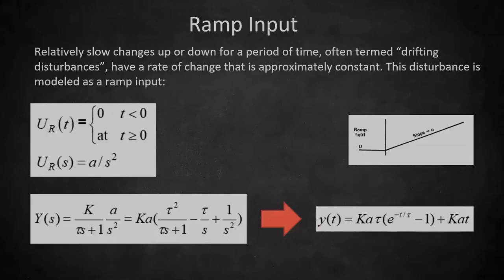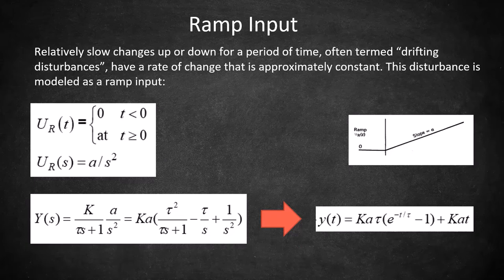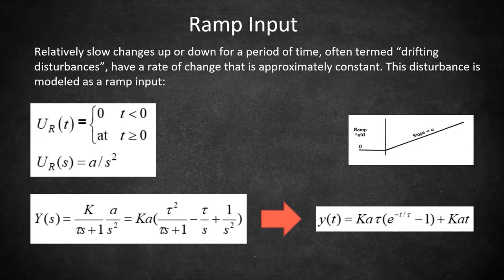The next type of input is a ramp input. A ramp input is a relatively slow change up or down for a period of time, often termed drifting disturbances, and have a rate of change that is approximately constant. This means we'll have another parameter we need to worry about, the slope of our input a.